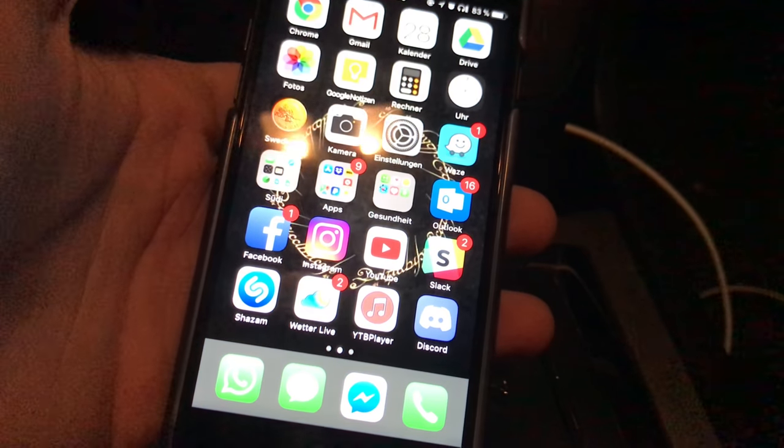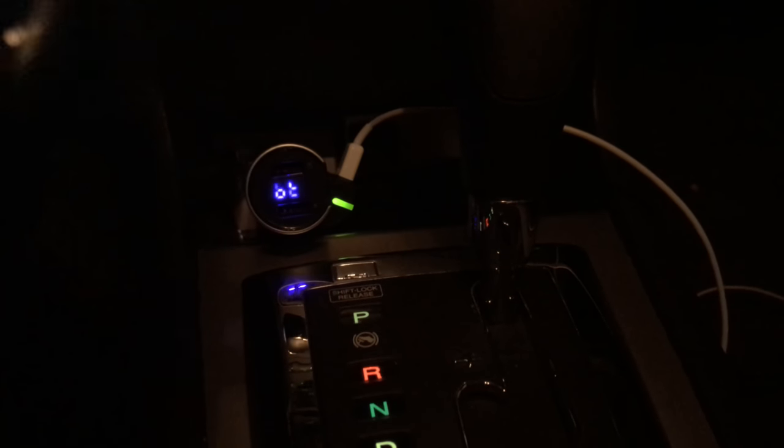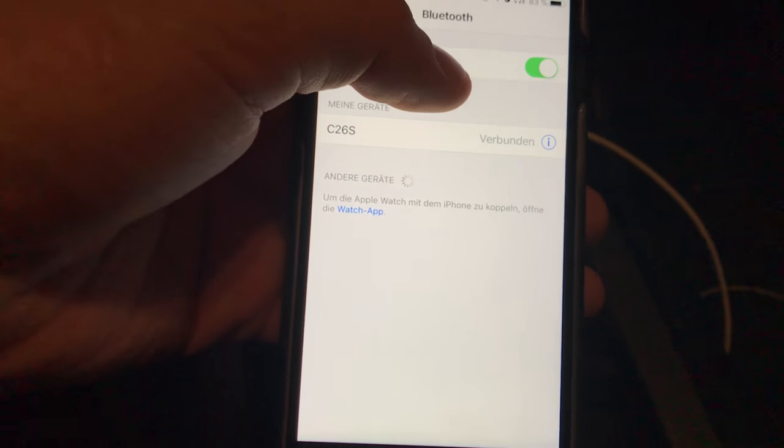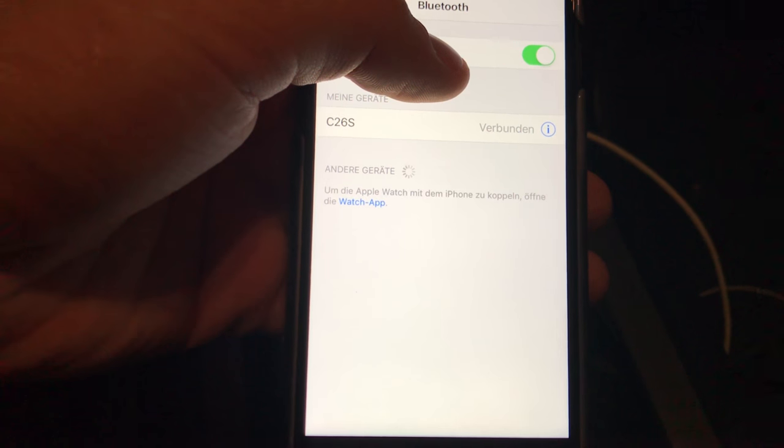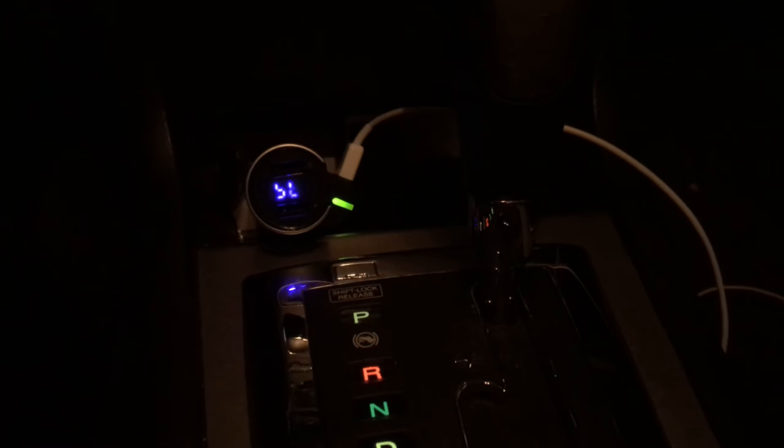So if you are wondering how to set it up, that is very simple. The first thing you do, you open the settings on your phone. I use an iPhone 7. For me it's in German. You open settings, then you scroll down to Bluetooth, activate it. And once it's on, you just simply connect to C26S. That is this device, the Voyomo Bluetooth FM transmitter.